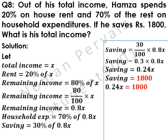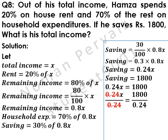Equal to 1800 comes as it is. Now, if we divide both sides by 0.24, then 0.24 is cancelled with 0.24, and x is equal to: if we divide 1800 by 0.24, it becomes 7500. This is our total income. Hence, this is our answer.